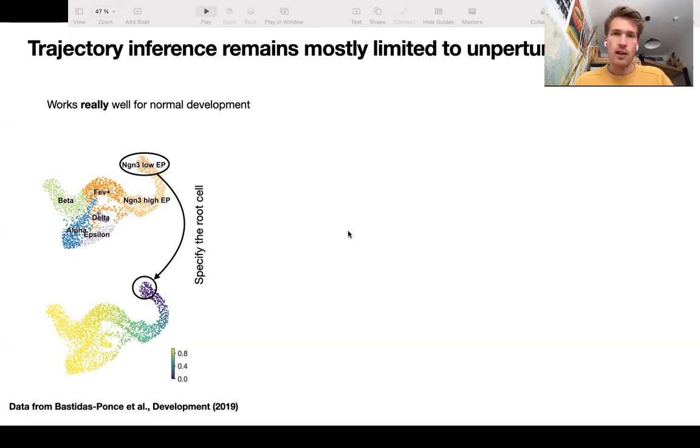This works really well for normal development. Here's an example on the left - it's pancreatic development where we know the process relatively well, we know where the initial and terminal states are, and we can give these to the algorithm as a prior, and it then computes pseudotime for us that basically allows us to study these continuous trends in the data.